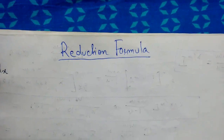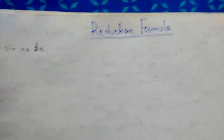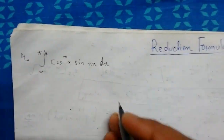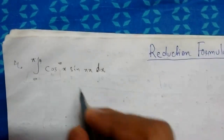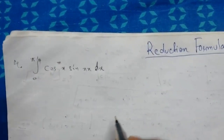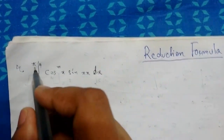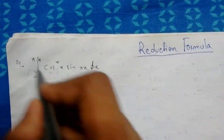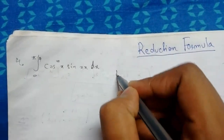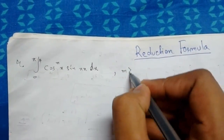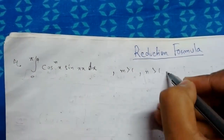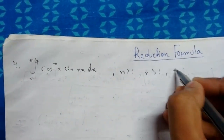Welcome back guys. Today we will be continuing the reduction formula. We will be moving to our fourth standard integral that we need to reduce. This is for the interval 0 to π/2, where m is greater than 1 and n is also greater than 1, and both are positive integers. So now let's start it.